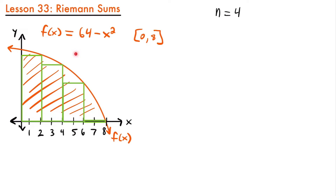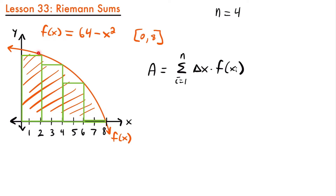To find the area under this curve, we calculate the area for each of these rectangles. The area of a rectangle is width times height. So the formula is: the area equals the sum from i equals 1 to n of delta x times f(x sub i). Delta x is the width of our rectangles, and f(x sub i) is the height. Because the right-hand corner of the rectangle is on the function, the height of each rectangle equals the value of that point on the function.